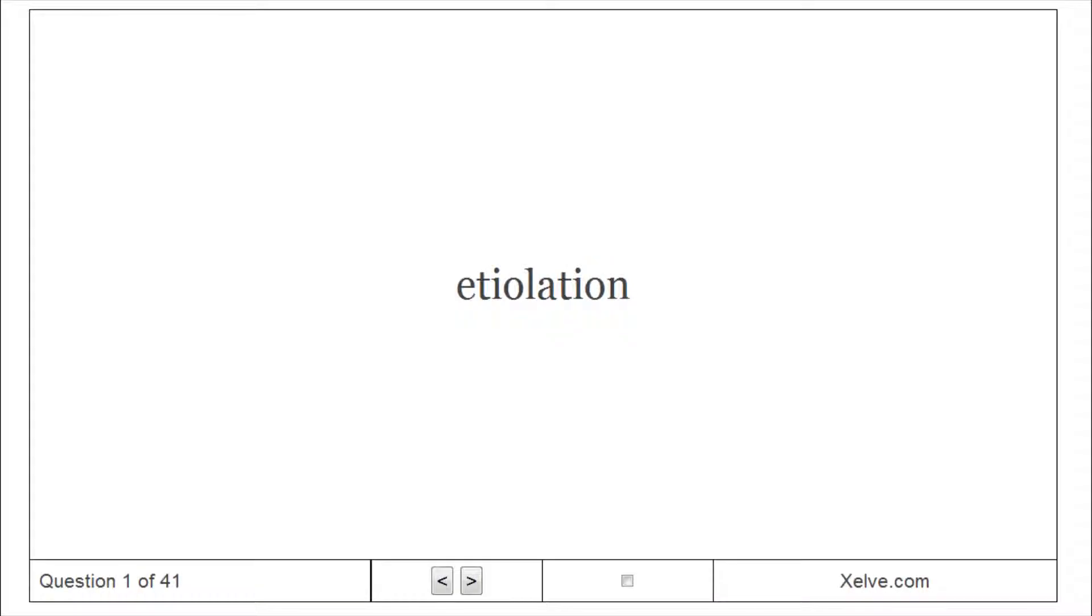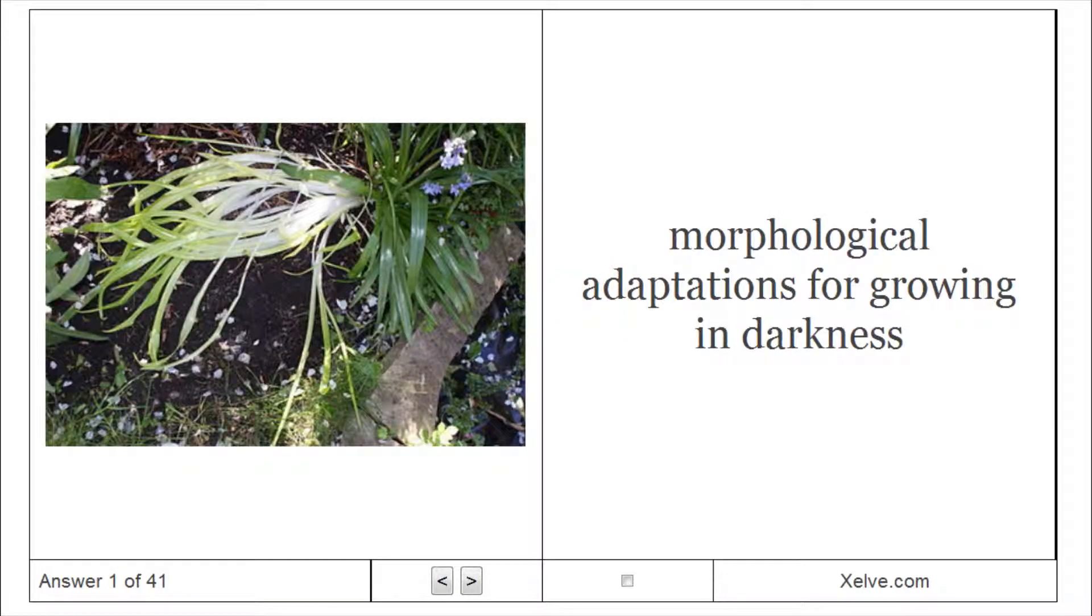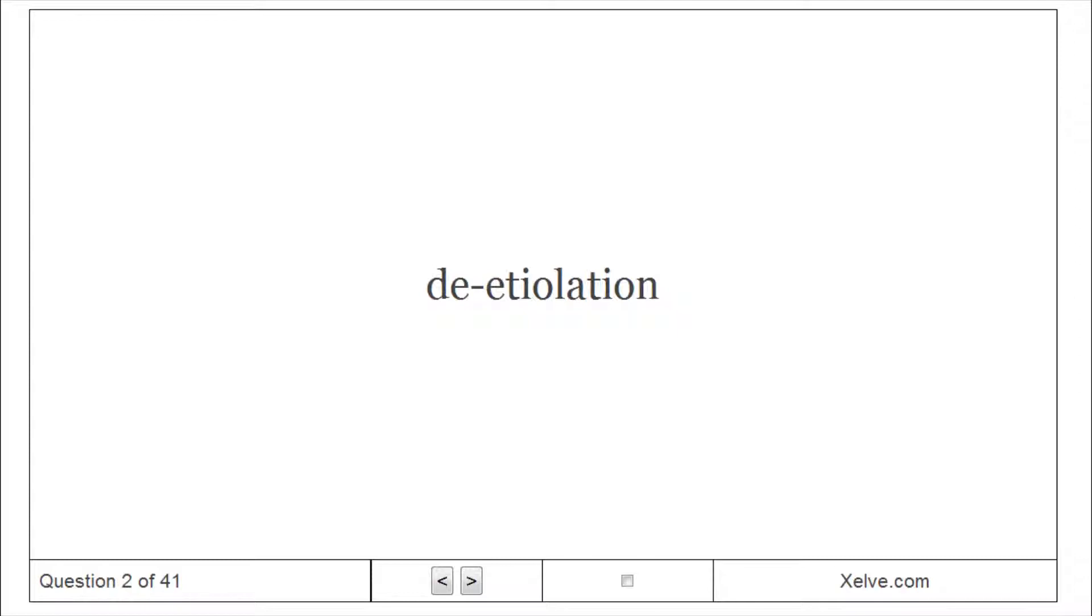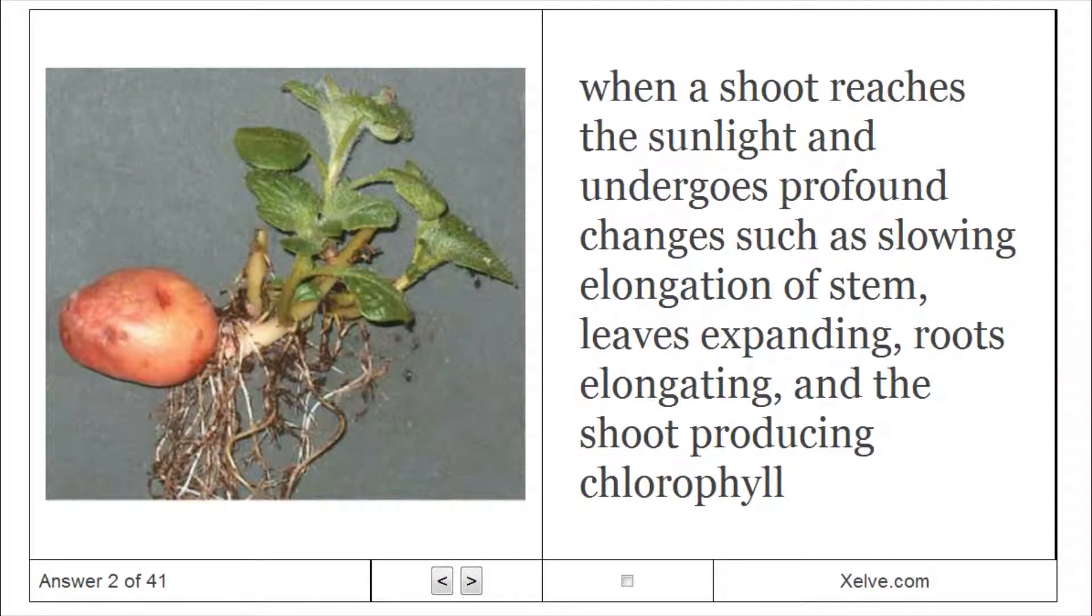Etiolation: morphological adaptations for growing in darkness. When a shoot reaches the sunlight, it undergoes profound changes such as slowing elongation of stem, leaves expanding, roots elongating, and the shoot producing chlorophyll.